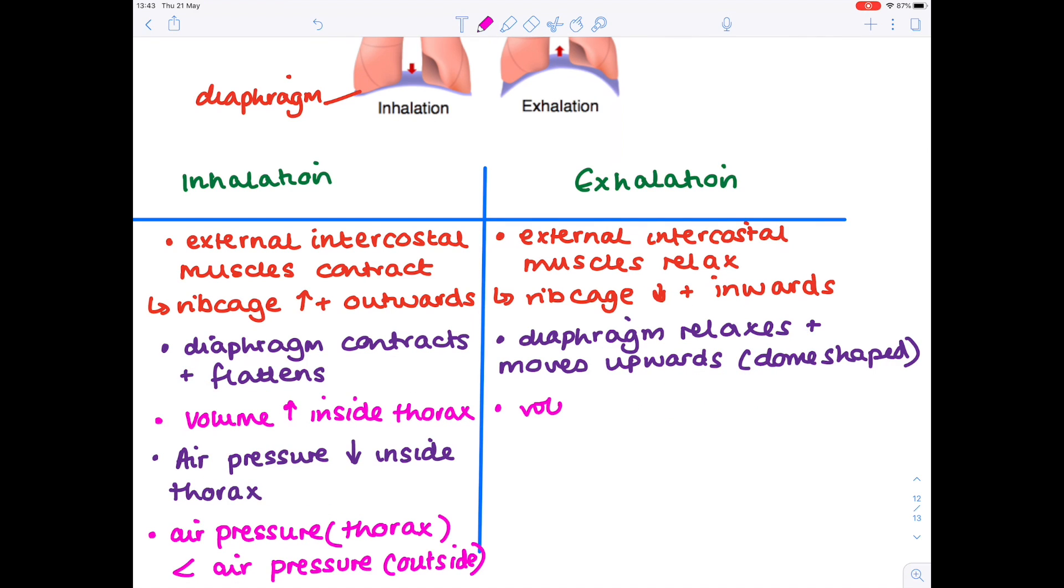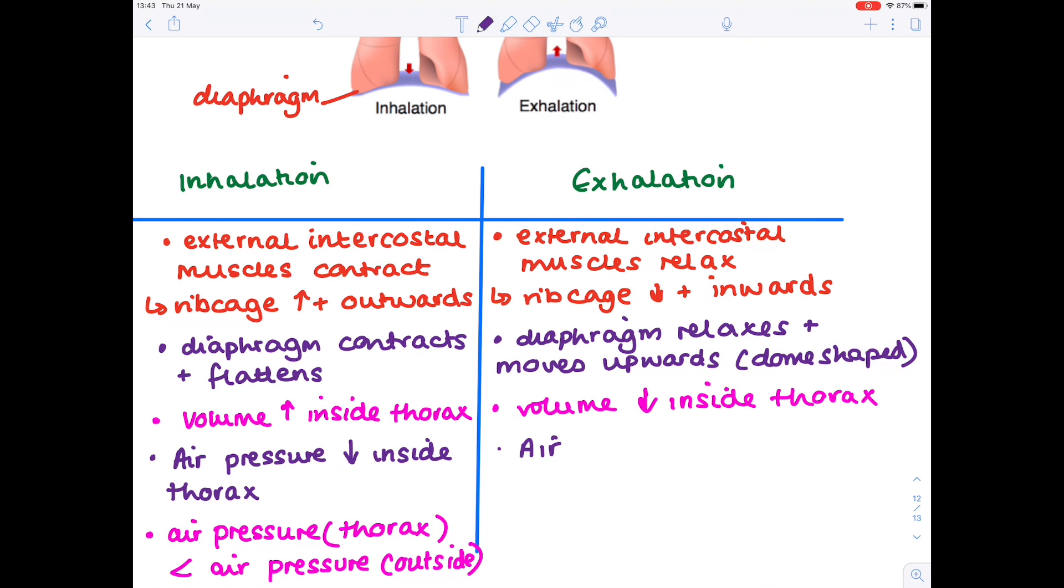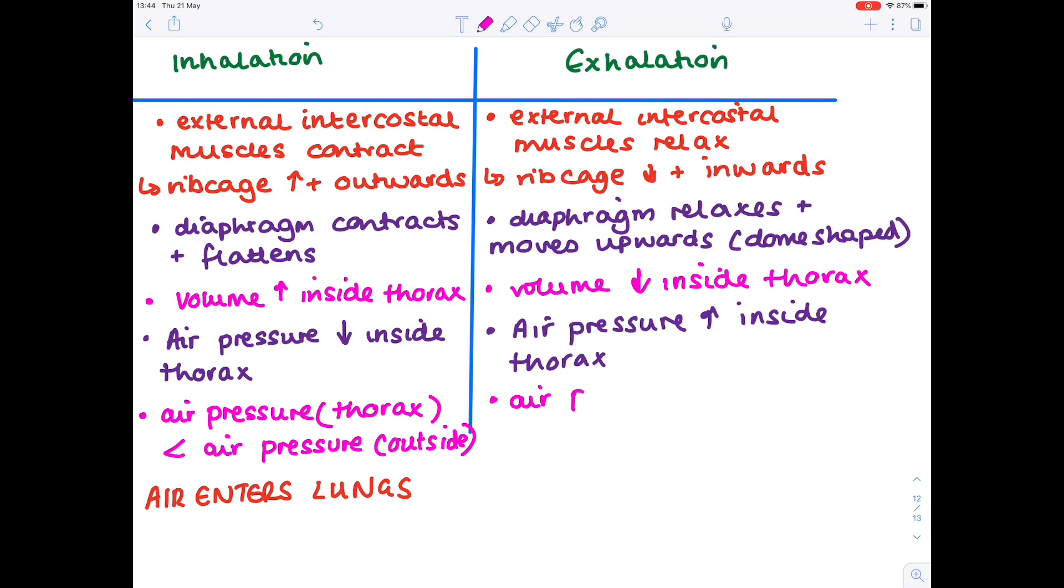This has a knock-on effect of meaning that the volume inside the thorax decreases. A smaller volume means that the air pressure increases inside the thorax. The air pressure inside the thorax is now more than that in the surrounding air. And therefore, air is forced out of the lungs.